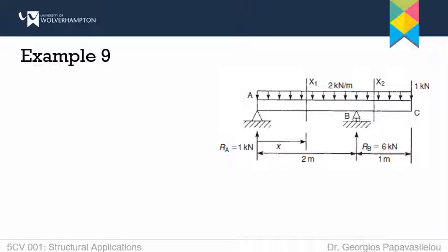Now that I know the support reactions, I will draw the shear forces diagram — do not forget the units. I have the typical points along the beam. All I need to do is consider forces acting perpendicular to the axis of the beam. I have the reaction of 1 kN at A. At point B, just to the left of where the point load applies, I have the 1 kN plus the effect of the UDL on that span.